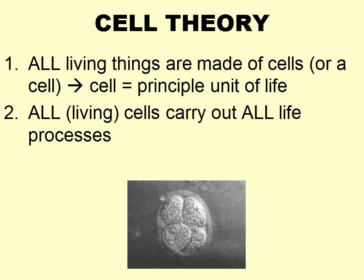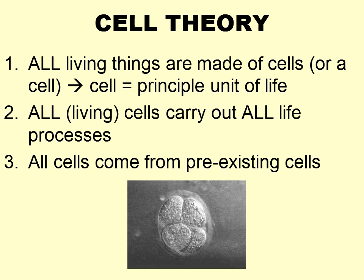All those living cells have to carry out all the life processes. They all grow, they all synthesize, they all assimilate, they all respond to changes in the environment — all of those things we talked about when we discussed the life processes. With that one exception of reproduction — not all cells reproduce. Most of the cells in your body actually are incapable of reproduction. But we'll get to that when we start talking about stem cells. The last thing is that cells don't come out of nowhere — all cells come from preexisting cells.